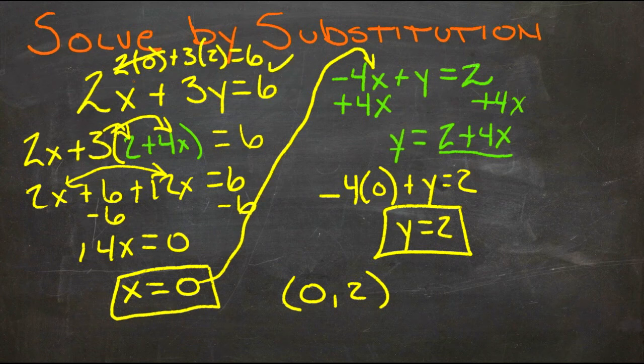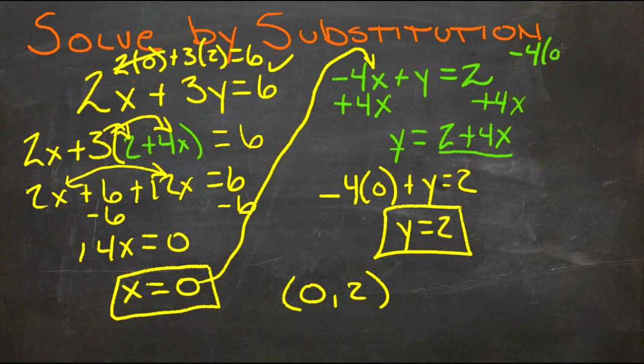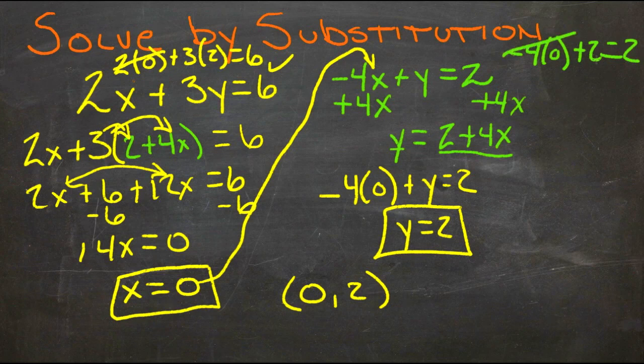And for the other one, we get negative 4 times 0 plus 2 equals 2. This goes away, and 2 equals 2, so it obviously works over here as well.